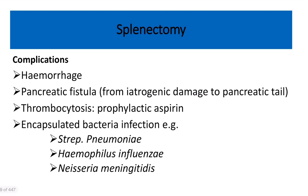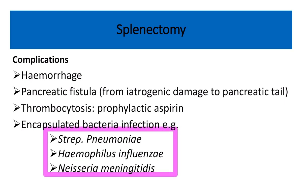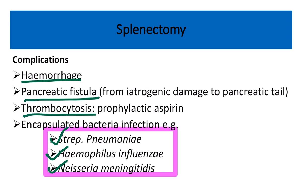What are the complications of splenectomy? The most common complication is postoperative or lifelong infection, particularly with Streptococcus pneumoniae, Haemophilus influenzae, and Neisseria meningitidis. Other complications include hemorrhage, pancreatic fistula, and thrombocytosis.